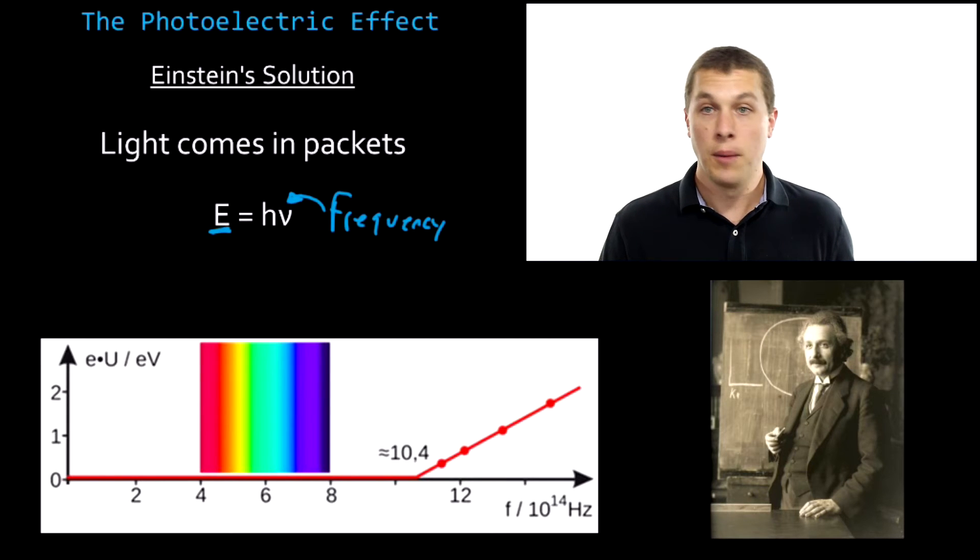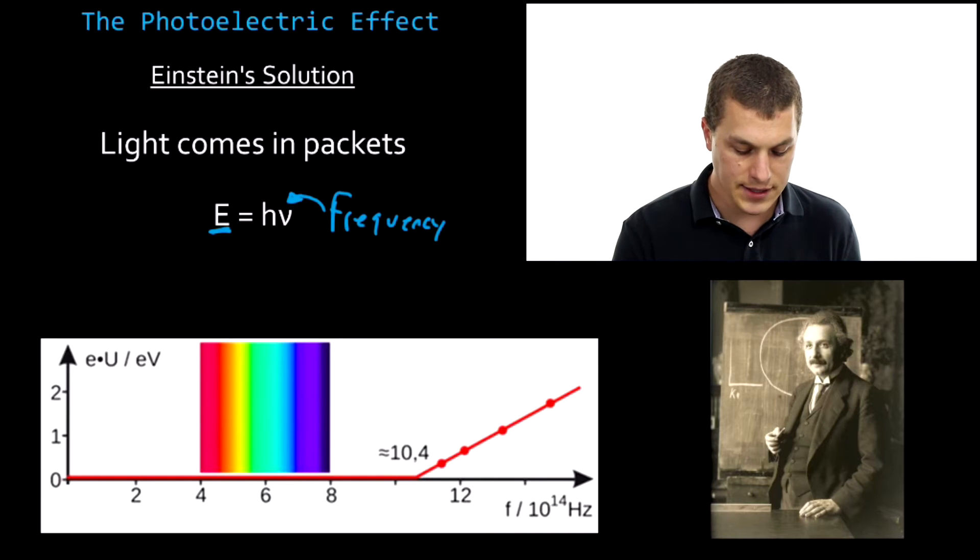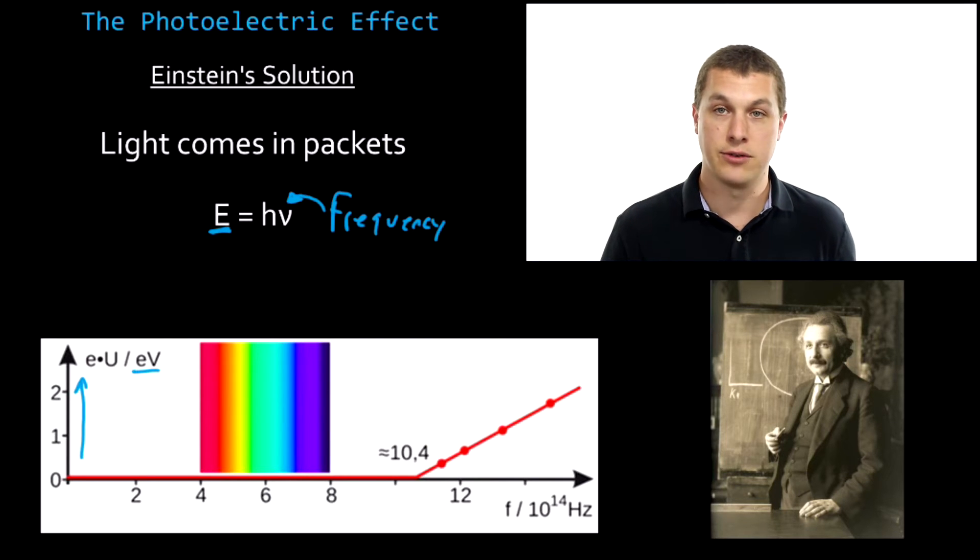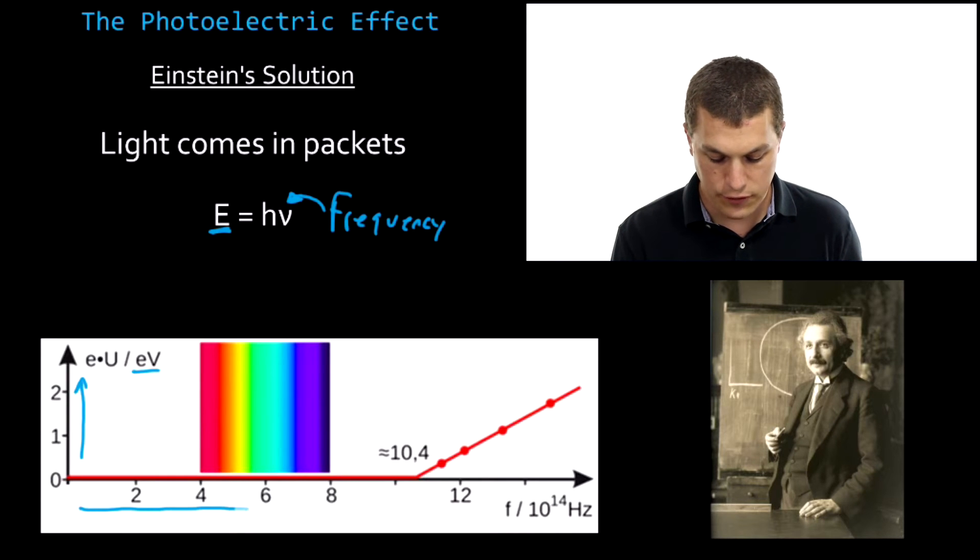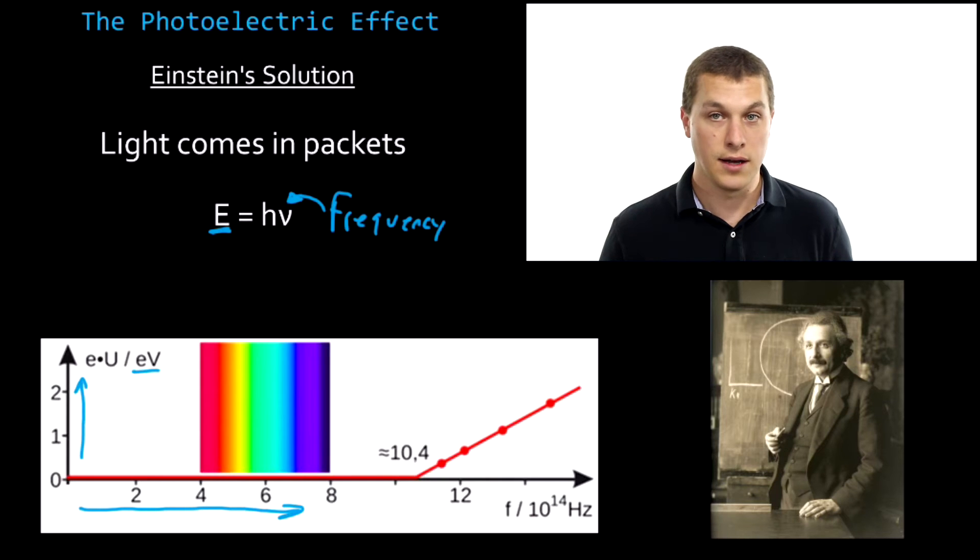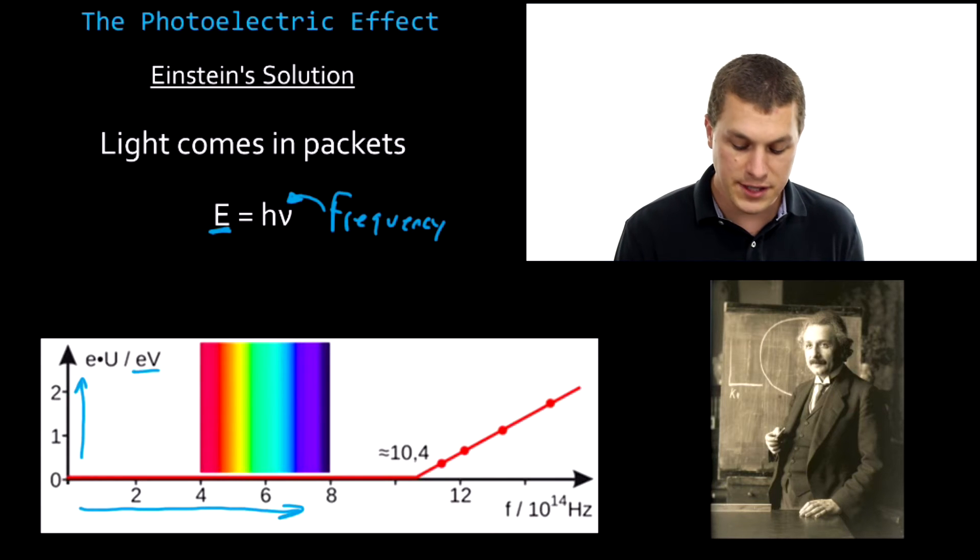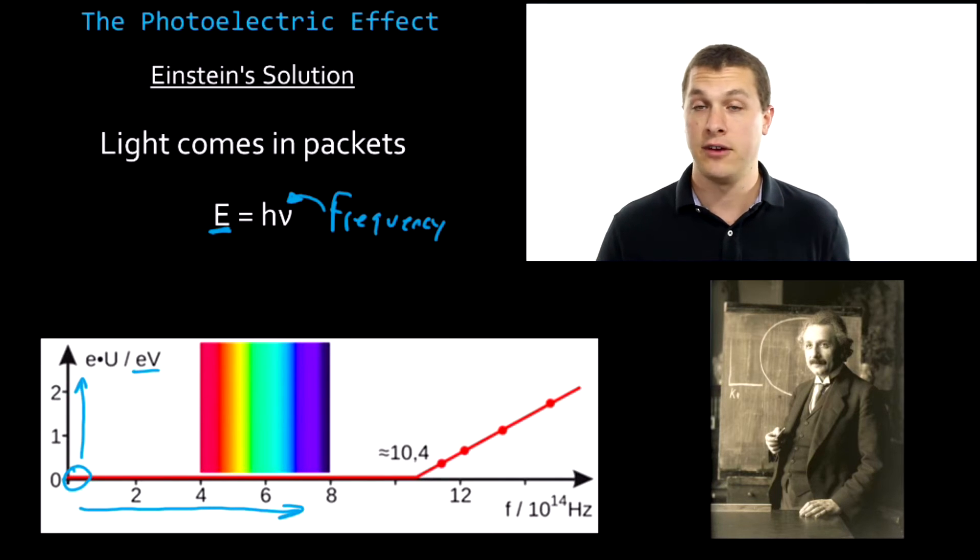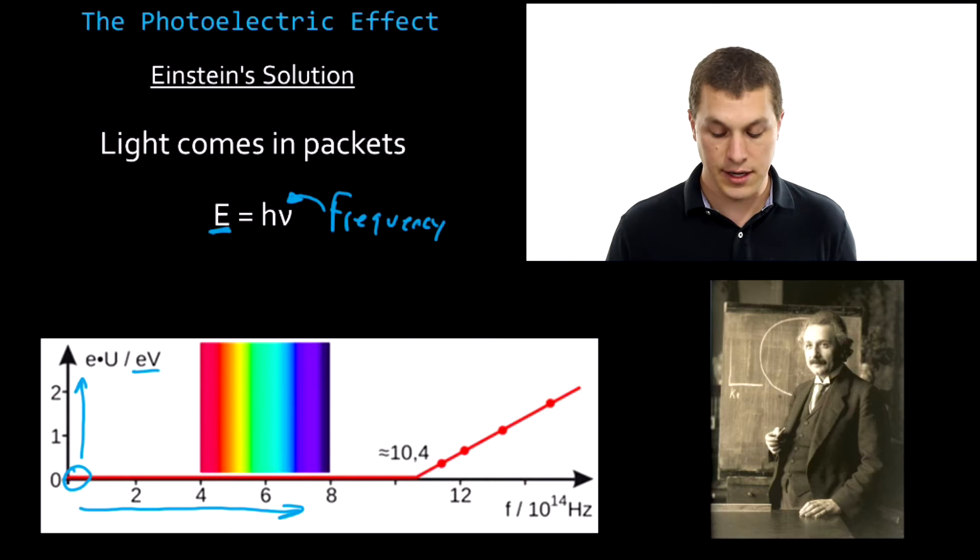So below in this graph, we see plotted some results from a photoelectric experiment. And what we have on the y-axis is the kinetic energy of the electrons in electron volts. And so basically, as you get higher and higher on this graph, you're getting electrons that are faster and faster. On the x-axis, we have frequency. So as we go from left to right, we're increasing the frequency of that light. And Einstein's proposal helps us understand this picture. What happens is when we're at lower frequencies, so over here, you see this red line is at zero. That's basically telling us when I shine light on it of lower frequencies, I don't see any electrons. They don't have any kinetic energy.